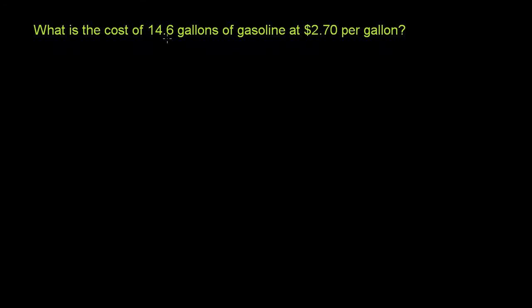What is the cost of 14.6 gallons of gasoline at $2.70 per gallon? So we have 14.6 gallons, and each gallon is going to cost $2.70. Or we could even view $2.70 as $2.7. So let's just multiply it times 2.7. It makes things a little bit simpler. I think you'll appreciate 2.70 is the same thing as $2.7 per gallon. So let's multiply this out.